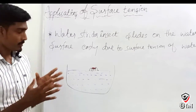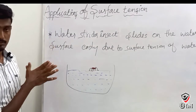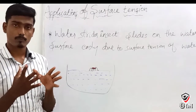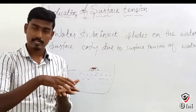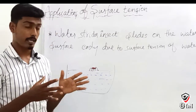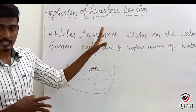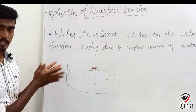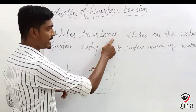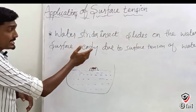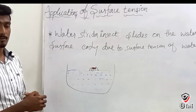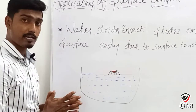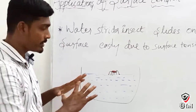The next application is the water strider insect. If you look at a water strider, it slides on the water surface very easily due to surface tension. The surface tension force acts along the surface, and this force per unit length is what we call surface tension.